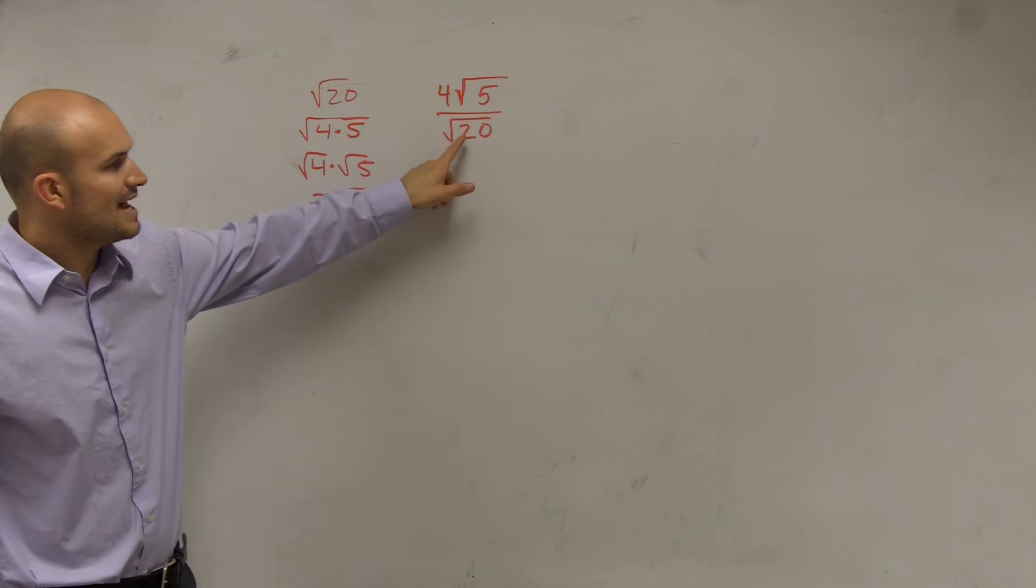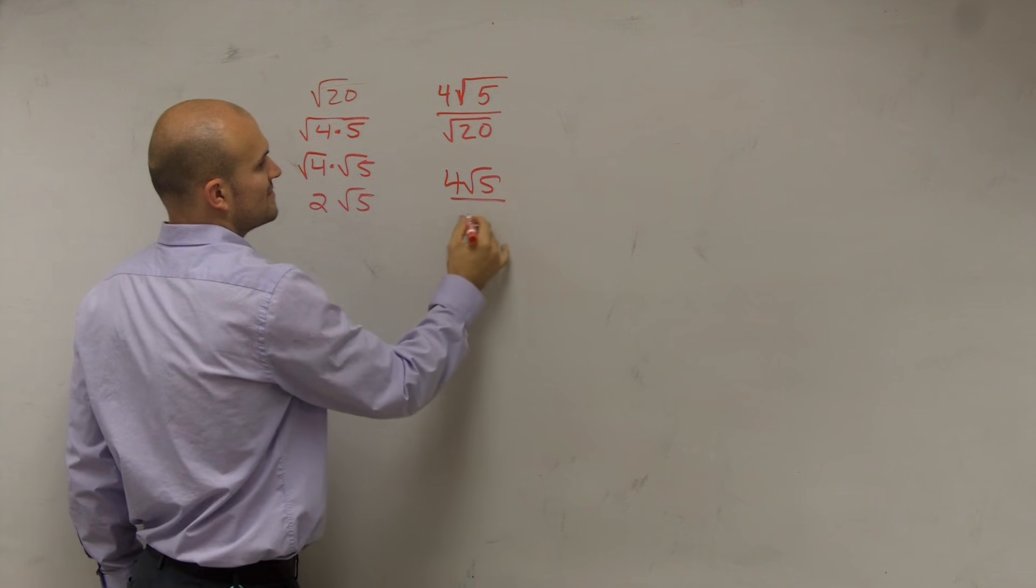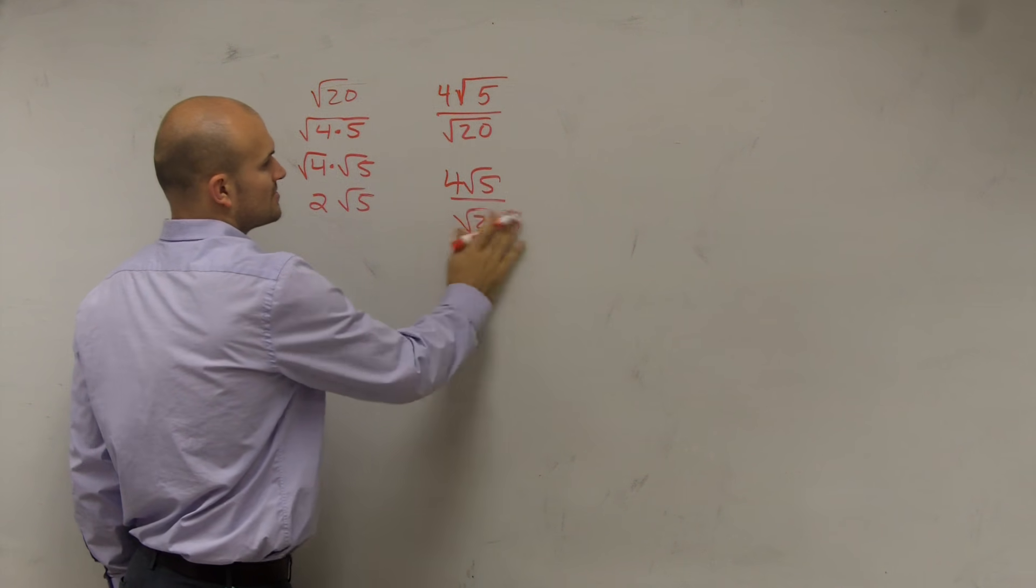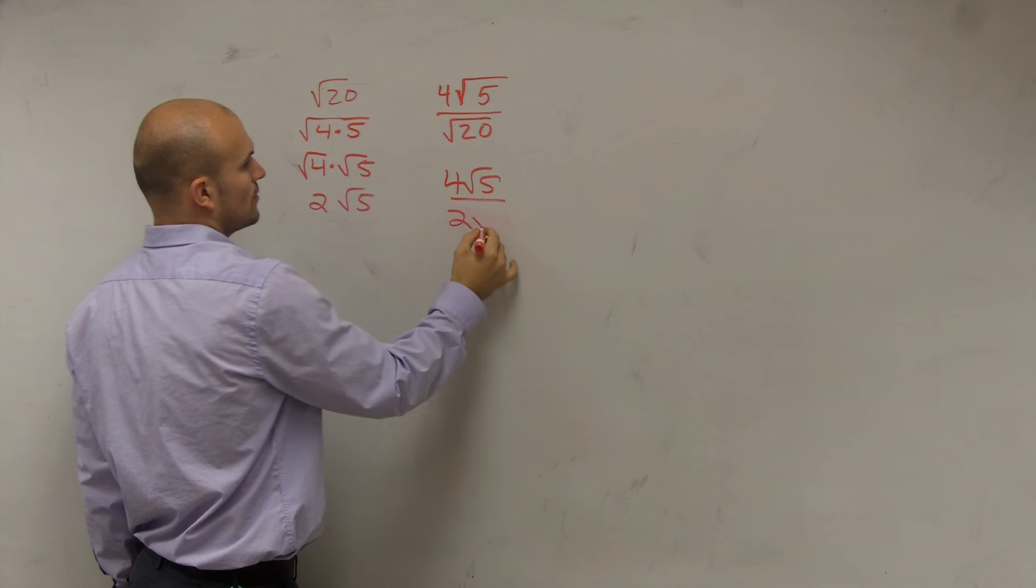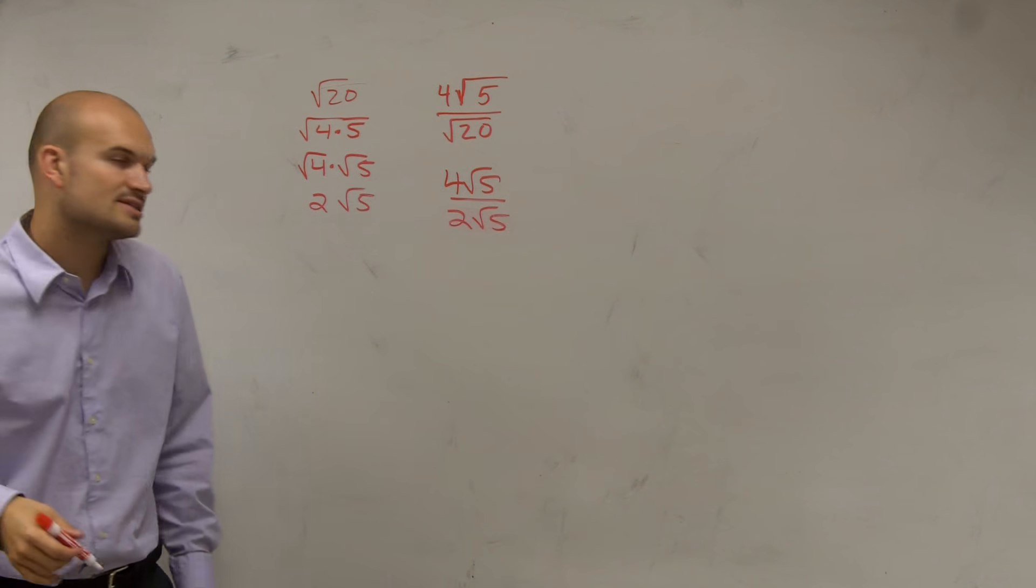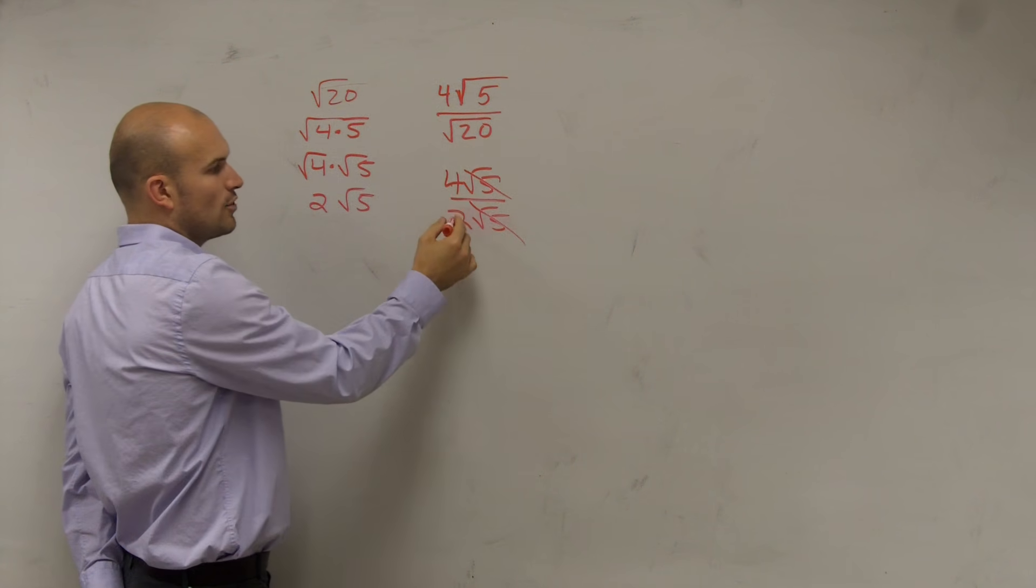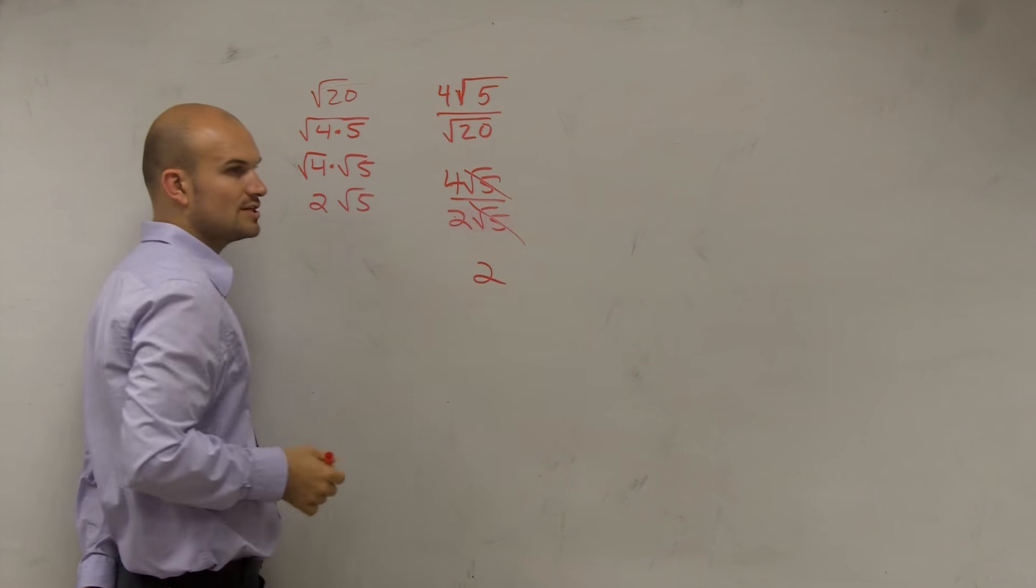So what I do is now I can rewrite this as 4, radical 5, divided by, oh I'm sorry, not radical 20, but 2, radical 5. And then what you guys will notice, Stephen, is that the radical 5s cancel out, and you get 4 divided by 2, which equals 2.